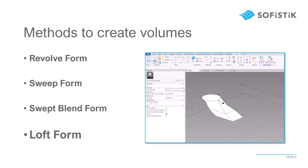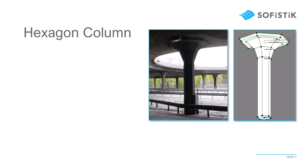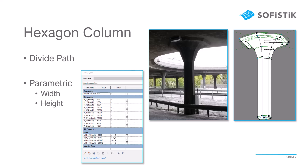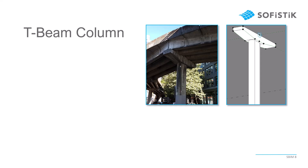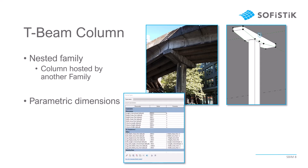Those are the principles you can use for creating basically any kind of volumetric geometry with one reference insertion point. To give you more practice-oriented examples, I also prepared two more videos coming after this one. In the first one, we will create a hexagon column — we will talk about the divide path component, which can be used for very versatile use cases, and we will parametrize the column with width and height parameters updatable with the substructure command. The third video will be about the T-beam column shown here, where we will talk about nested families, meaning the column itself is hosted by another family and used in this main family for the T-beam — everything parametrized, of course.